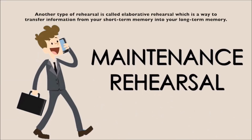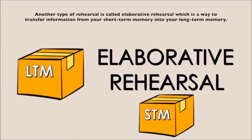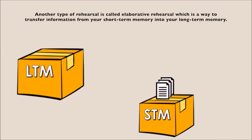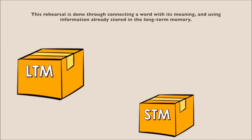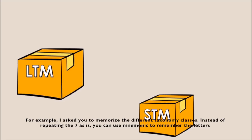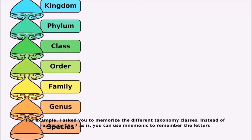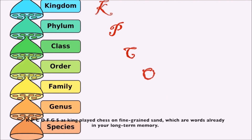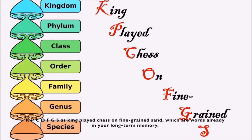Another type of rehearsal is called elaborative rehearsal, which is a way to transfer information from your short-term memory into your long-term memory. This rehearsal is done through connecting a word with its meaning and using information already stored in long-term memory, so the new information will be remembered more efficiently over time. For example, to memorize the taxonomy classes, you can use the mnemonic K-P-C-O-F-G-S as 'King Played Chess On Fine Grade Sand,' which uses words already in your long-term memory.